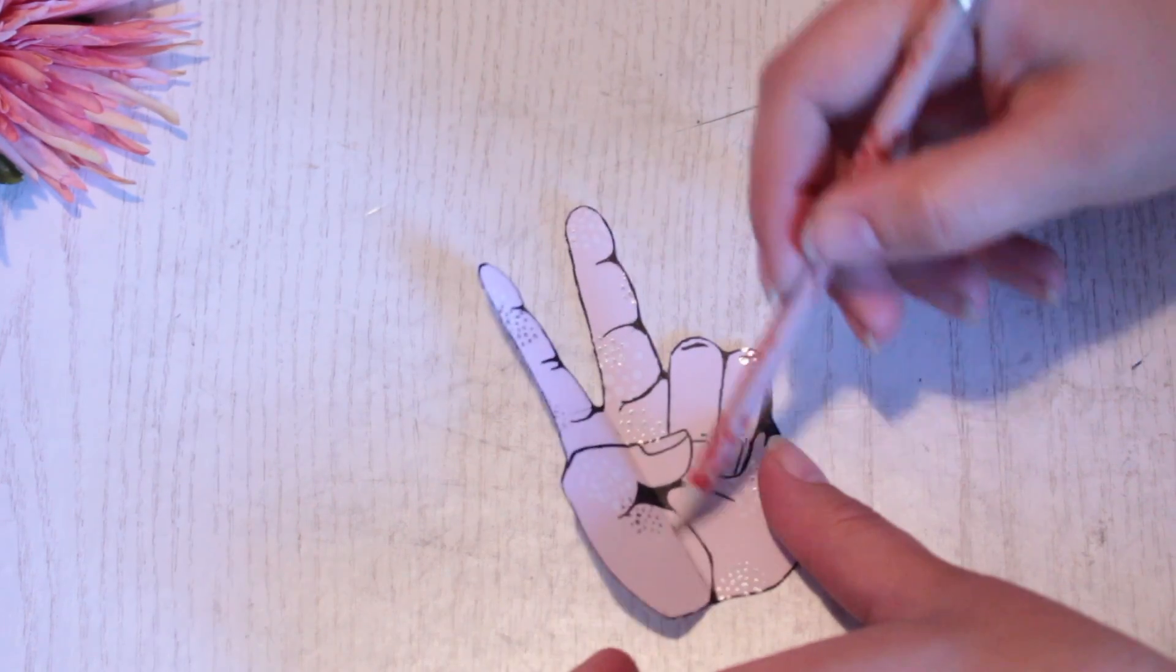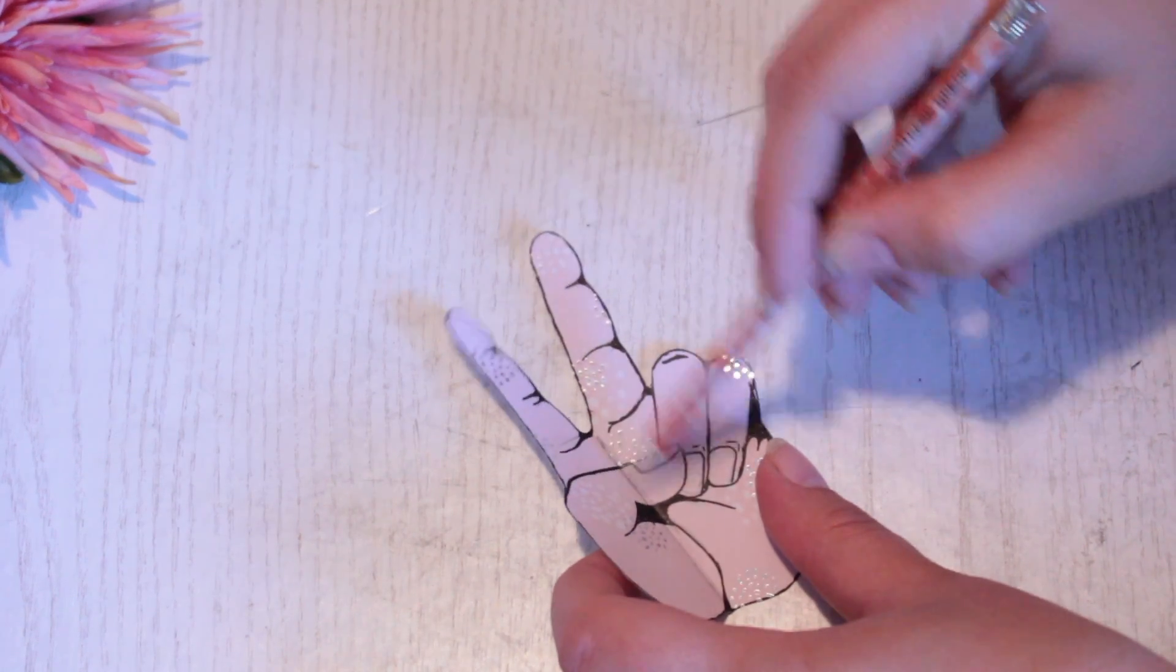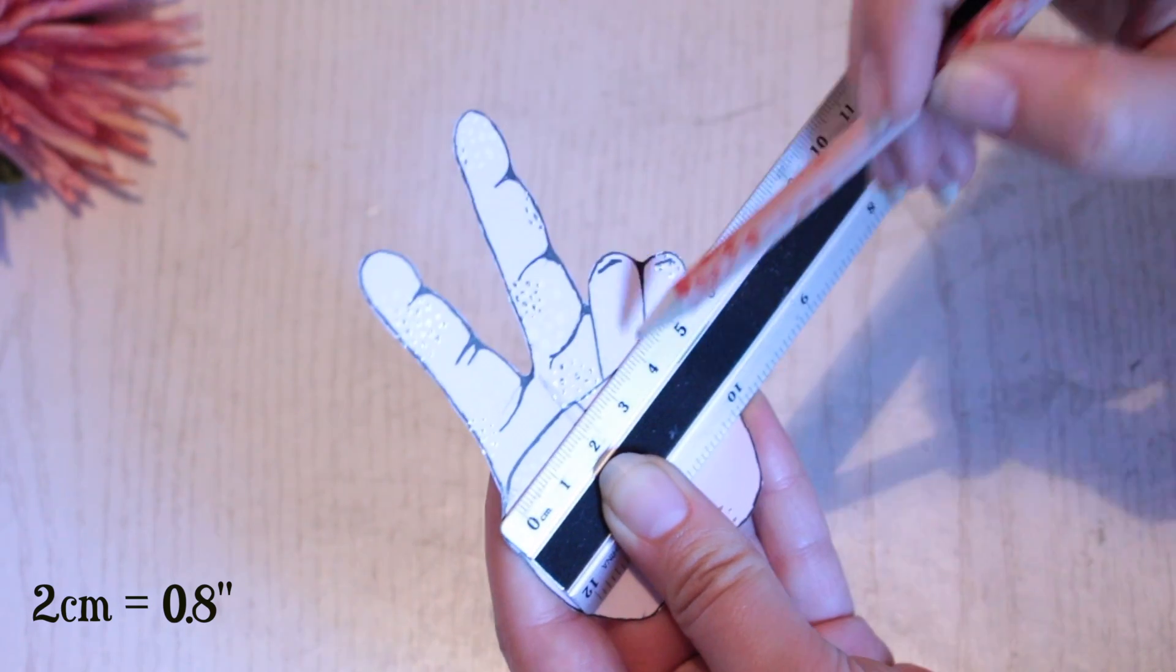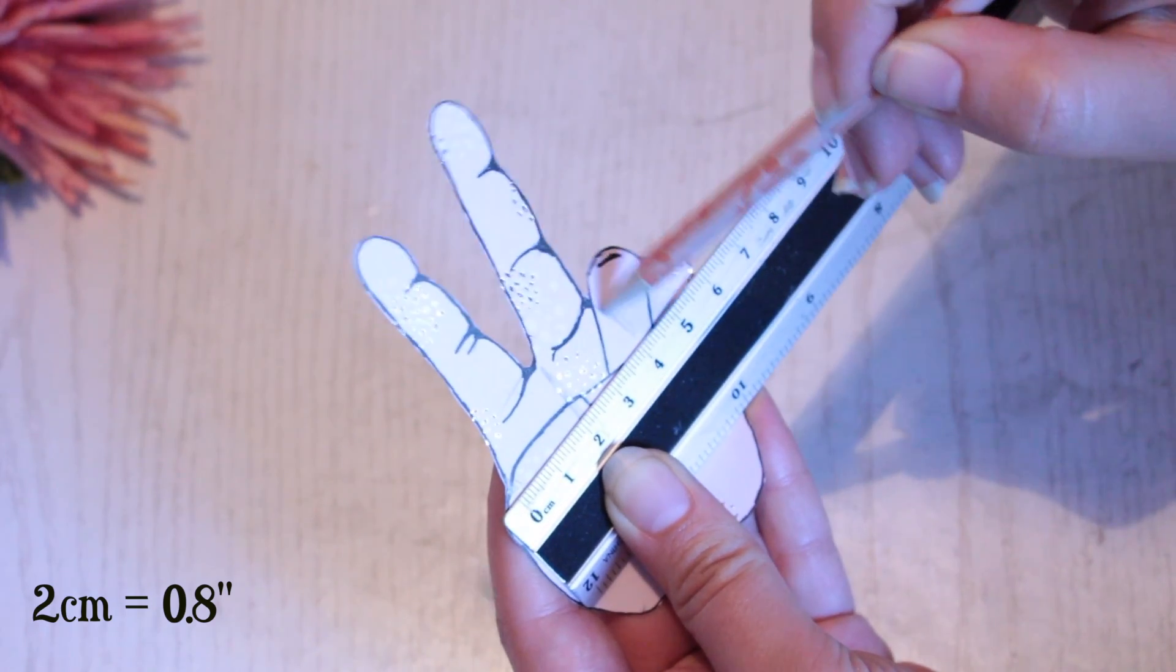Just to make clear where the fold is, use your pencil to mark it up. Use your ruler and measure out 2 cm from the middle score and then make a mark.